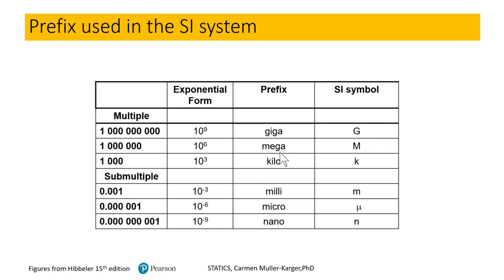It's very important to understand unit prefixes. Giga means multiply by 10⁹, mega is 10⁶, kilo is 10³, milli is 10⁻³, micro is 10⁻⁶, and nano is 10⁻⁹.